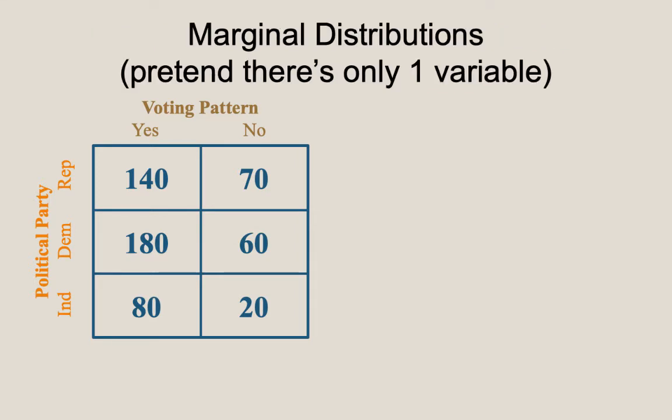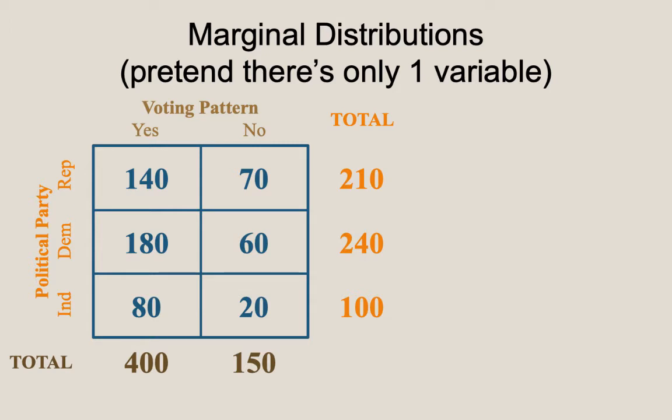We will now introduce the concept of the marginal distribution. In any contingency table, we can talk about the marginal distribution. Essentially, we are going to pretend for a moment that there is only one variable in our dataset. For example, if I pretend the only variable is voting pattern, I ignore the additional information about political party and imagine collapsing all of the rows — adding up each column for a total of 400 people who voted, and 70 plus 60 plus 20 equals 150 people who did not vote.